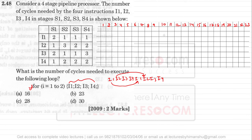I've already created a table representing the number of clock cycles each instruction takes in each stage. Now let us execute these instructions one by one in the pipeline.